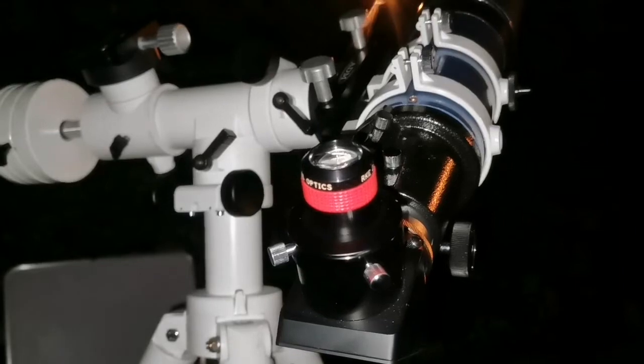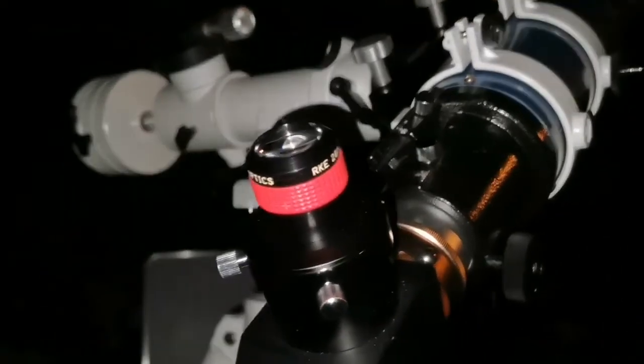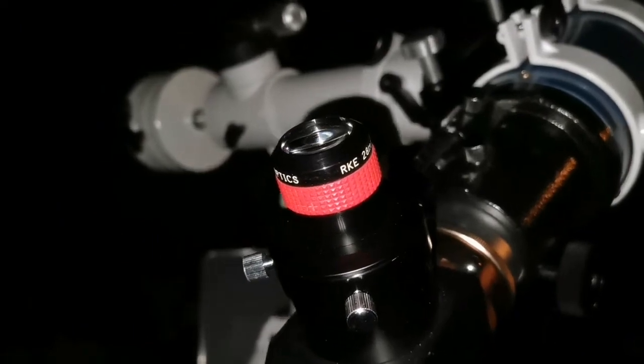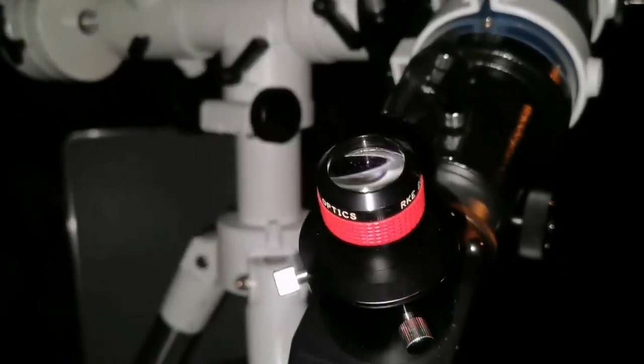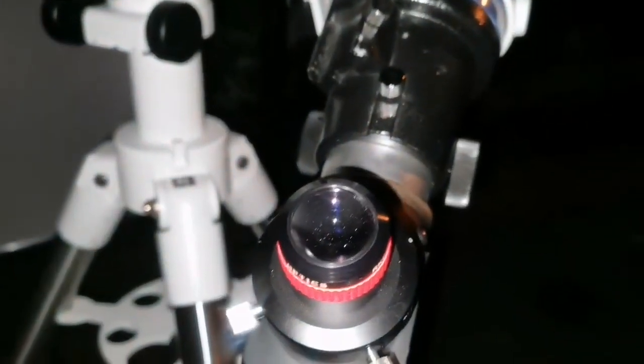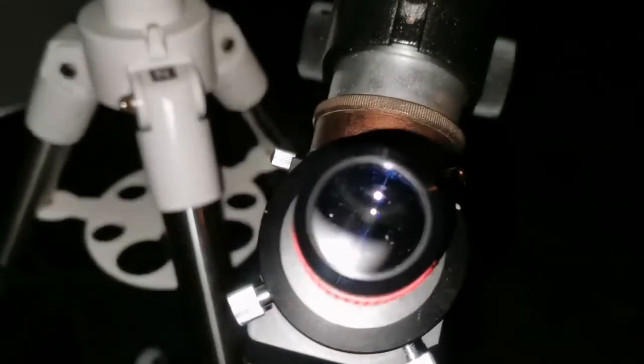Now let me bring the original RKE 28 millimeter from the Edmund Scientific. Okay, this is the RKE 28 millimeter. It has a higher magnification than the 40 millimeter and the image is floating. You don't see that eyepiece at all, the image is floating.